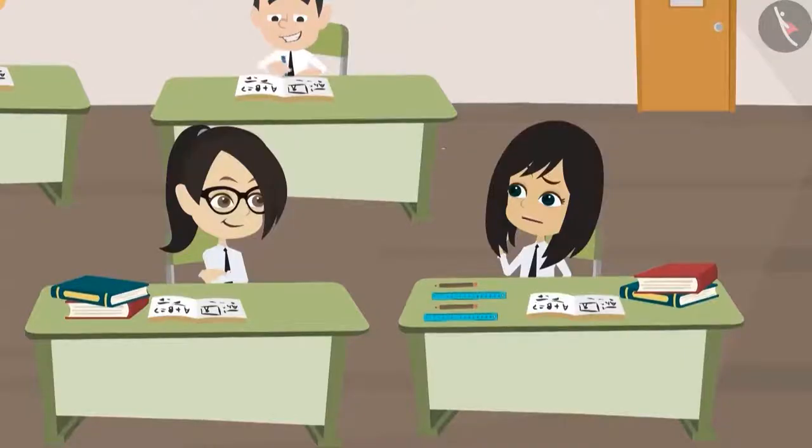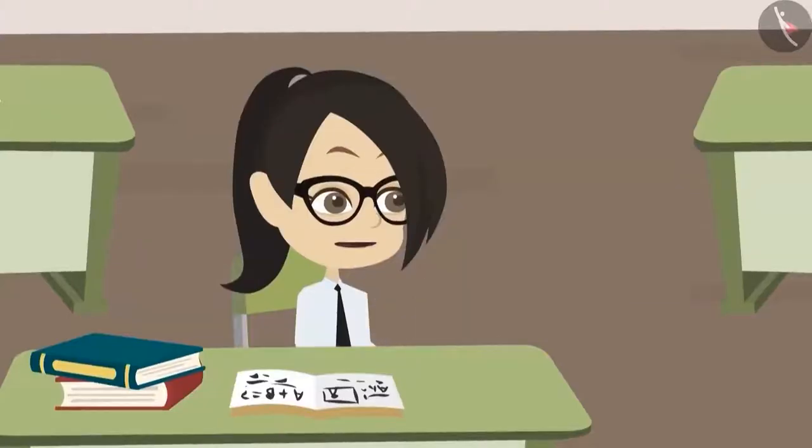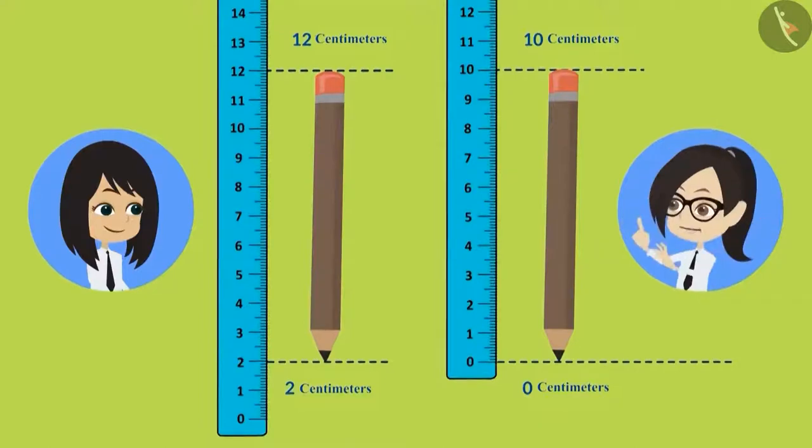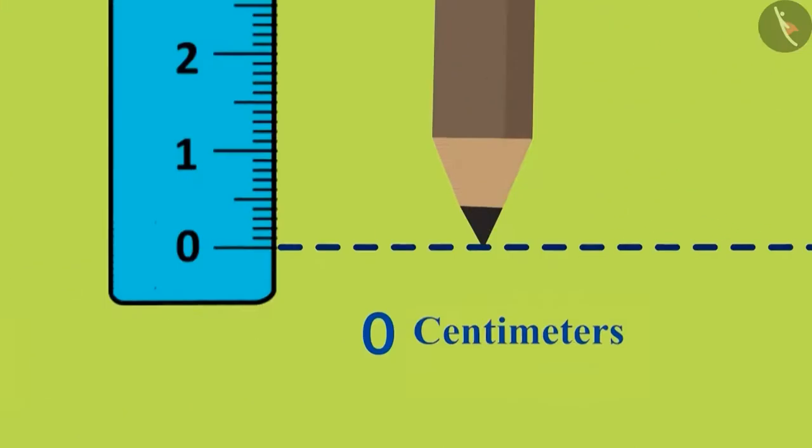What difference does that make? It leads to incorrect measurements. To measure the correct length of objects using a scale, we should place their lower end at 0, like I have done.